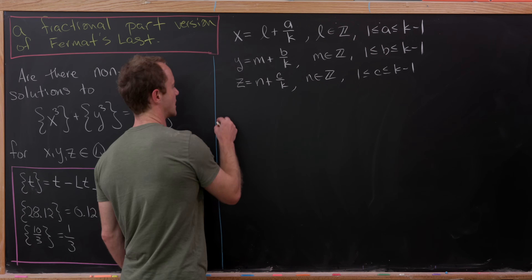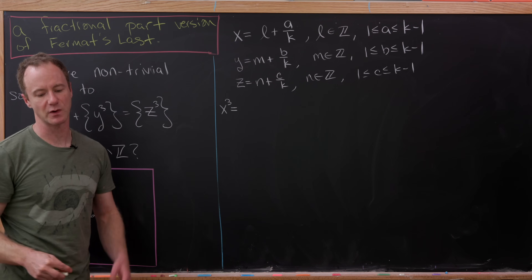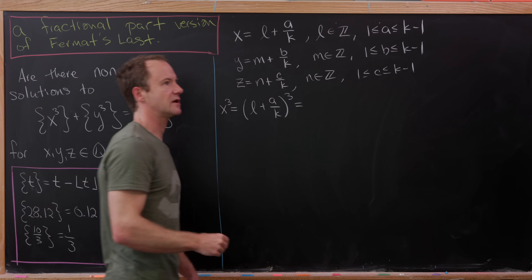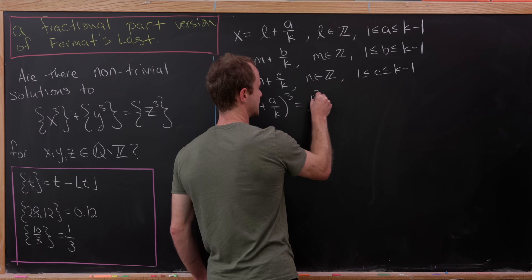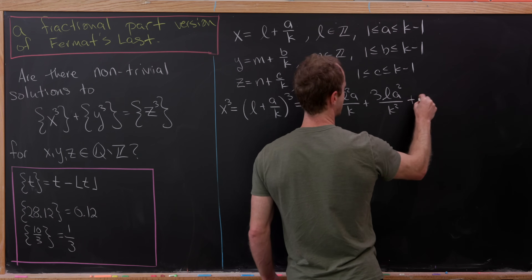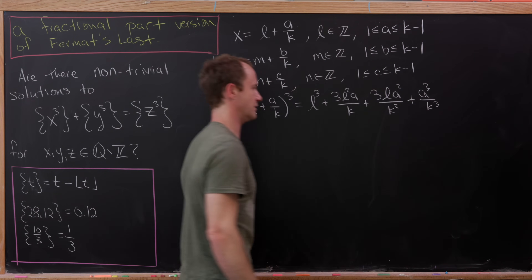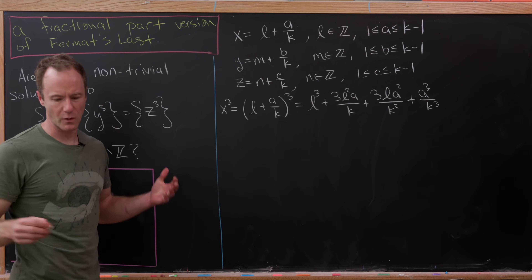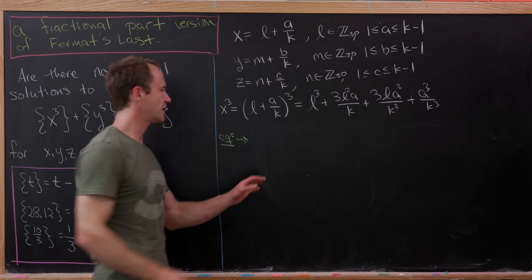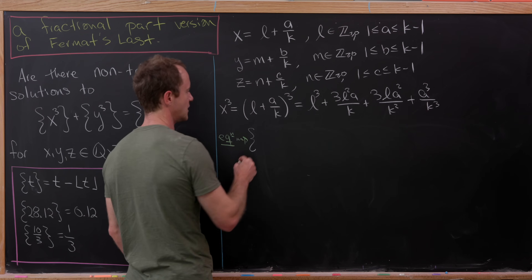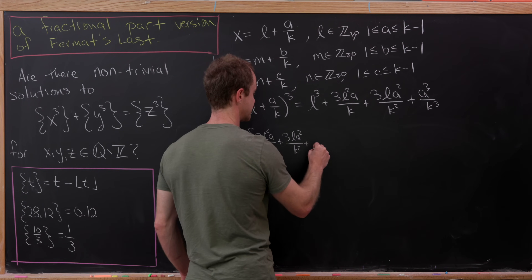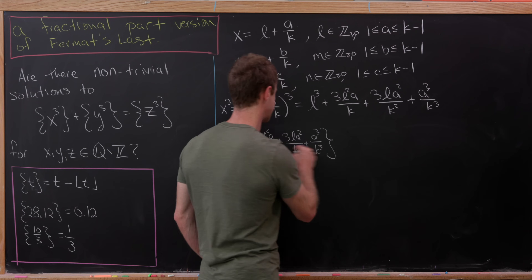Let's look at x³ to see the format. We have x³ = (l + a/k)³. Expanding with the binomial formula gives l³ + 3l²a/k + 3la²/k² + a³/k³. Then y³ and z³ are similar. Putting this all into our equation, the fractional part of x³ involves 3l²a/k + 3la²/k² + a³/k³.